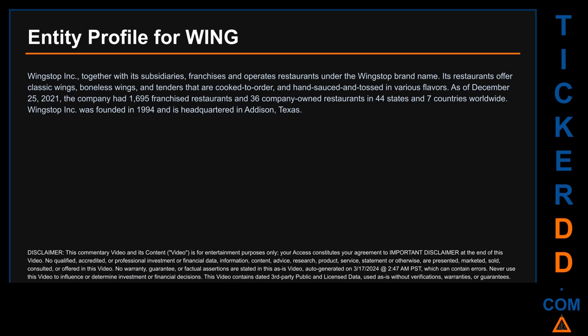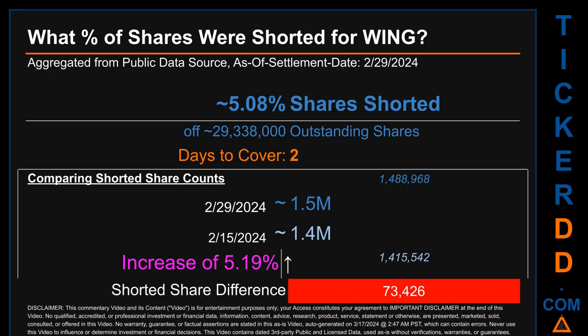The company behind this ticker — here is what I found. Wingstop Inc., together with its subsidiaries, franchises and operates restaurants under the Wingstop brand name. Its restaurants offer classic wings, boneless wings, and tenders that are cooked to order and hand-sauced and tossed in various flavors. As of December 25, 2021, the company had 1,695 franchised restaurants and 36 company-owned restaurants in 44 states and seven countries worldwide. Wingstop Inc. was founded in 1994 and is headquartered in Addison, Texas.